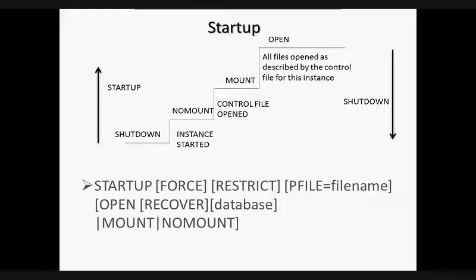In read write mode, the database is in read write mode so that users can generate redo logs. Mount mode mounts the database for certain DBA activities but does not provide user access to the database. No mount mode creates the SGA and starts background processes but does not provide access to the database. The PFILE=filename option with the startup command enables a non-default parameter file to be used to configure the instance. The FORCE option, if the instance is already running, aborts it before performing a normal startup.